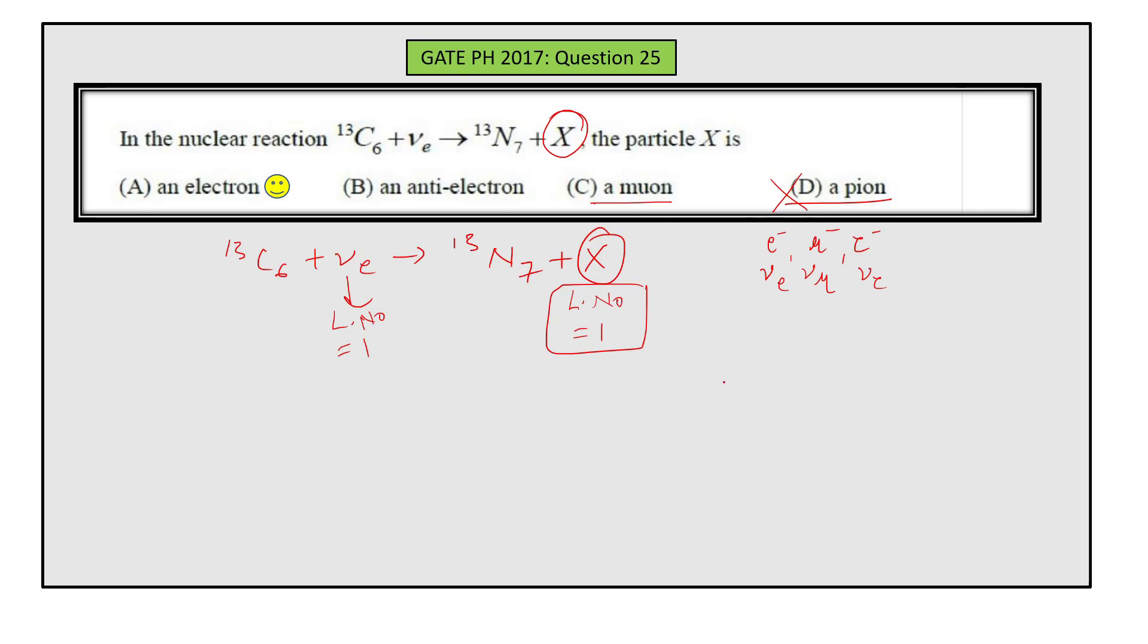Muon has plus one as lepton number. We have lepton number plus one on both sides, but there is a twist. We have total lepton number which is the sum of individual lepton numbers of electron, muon, and tau.